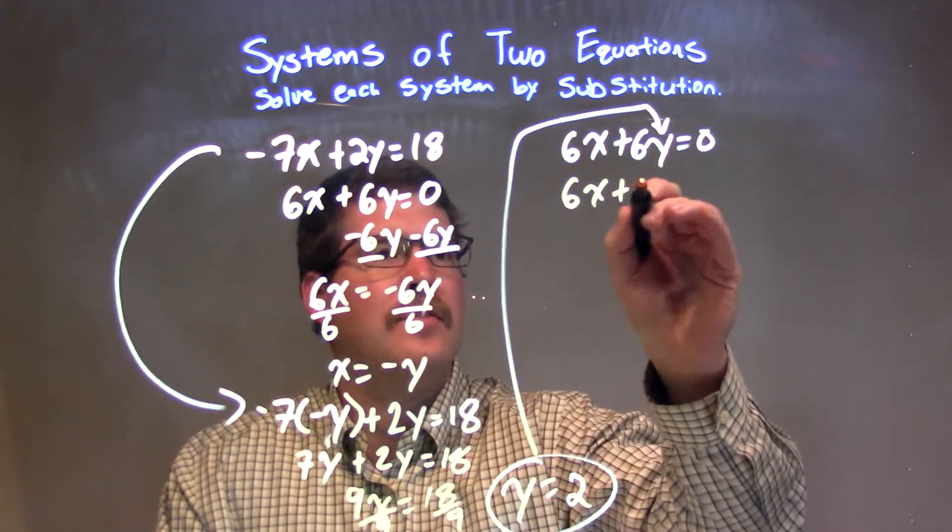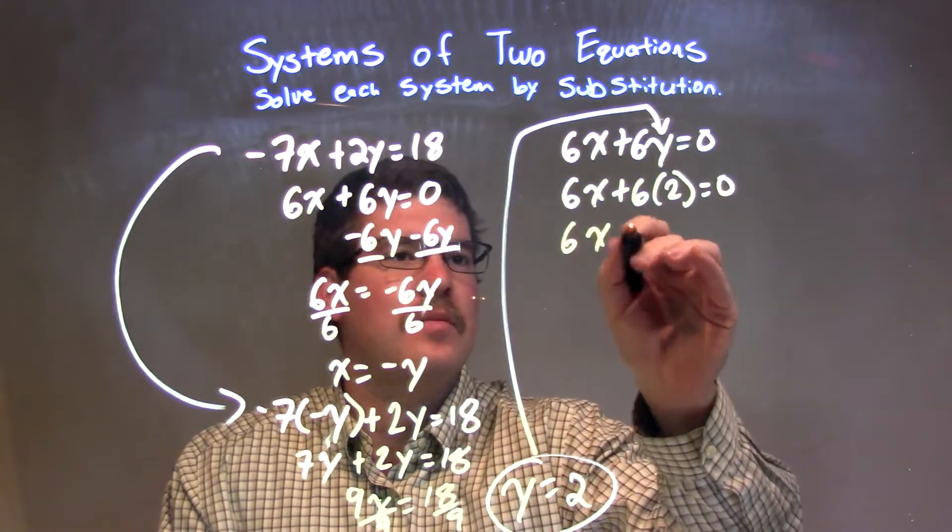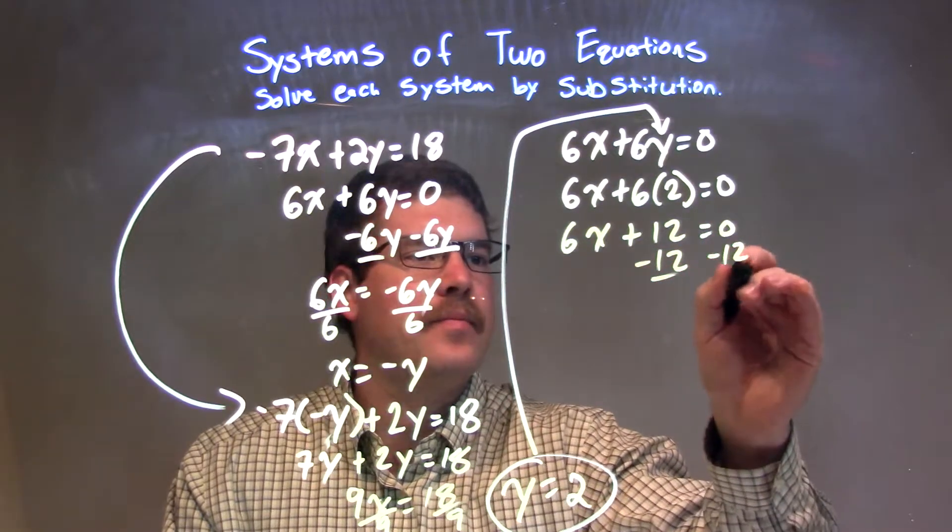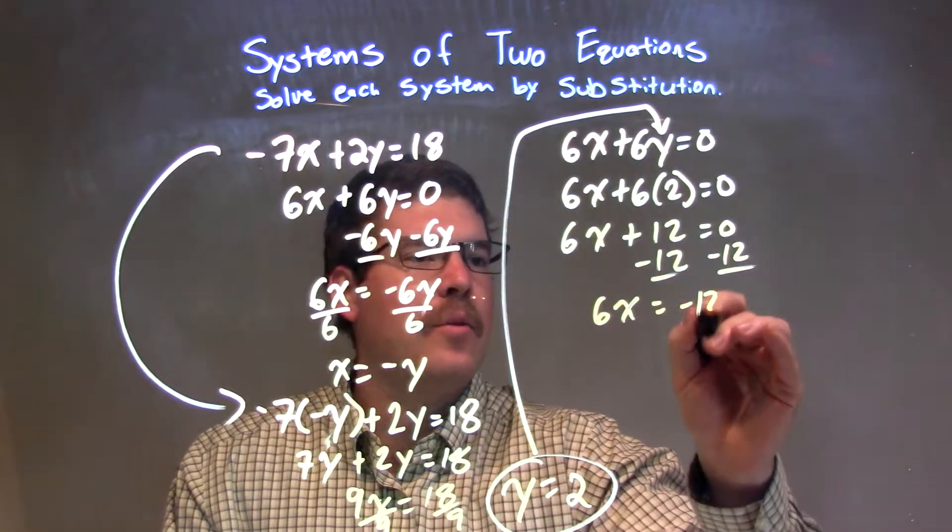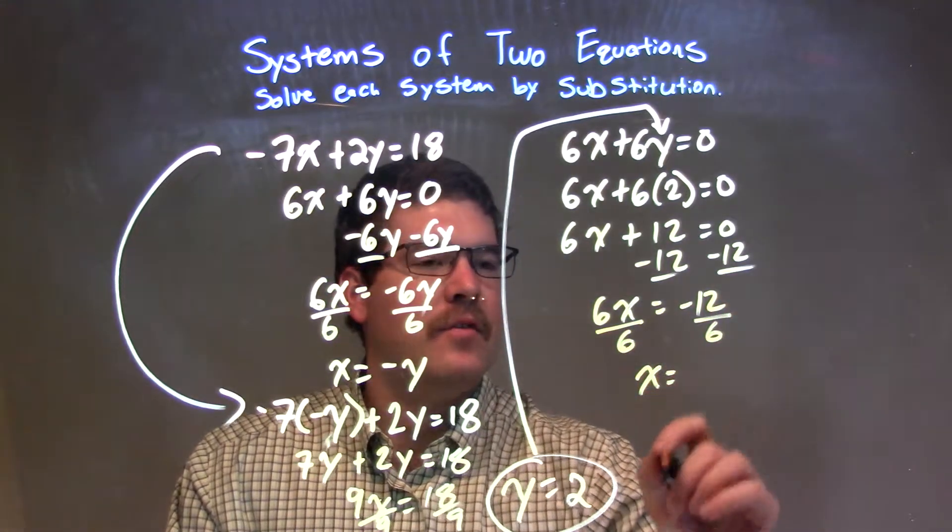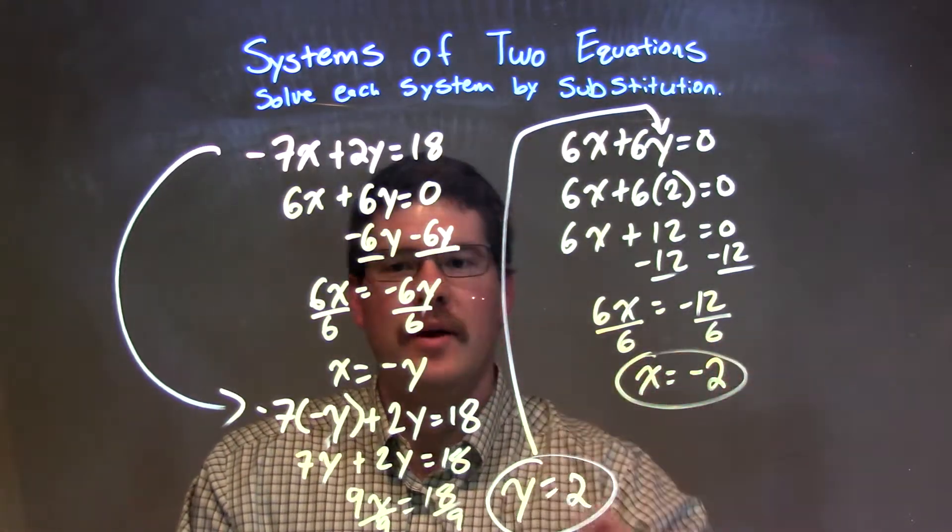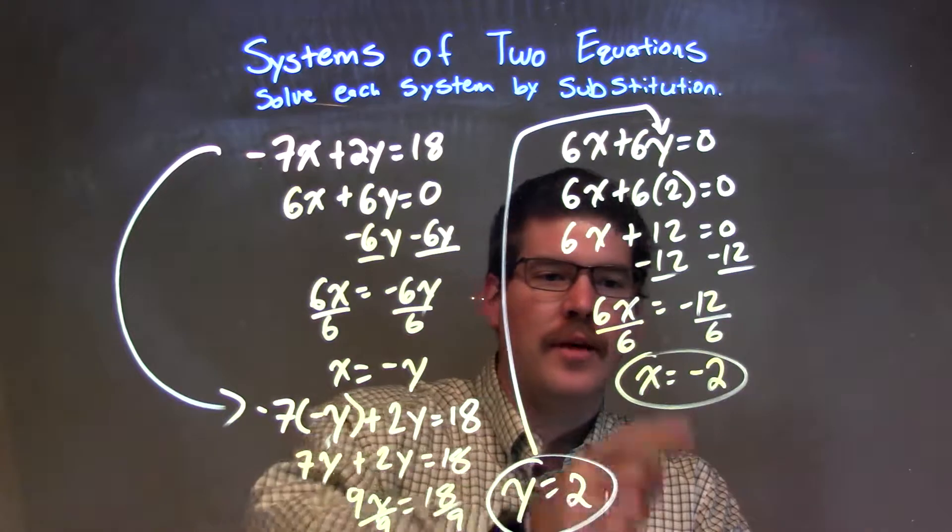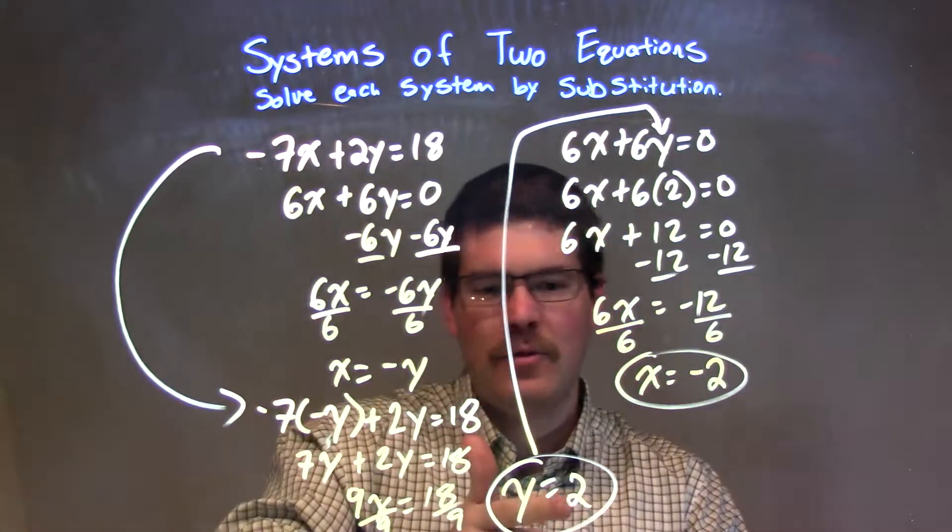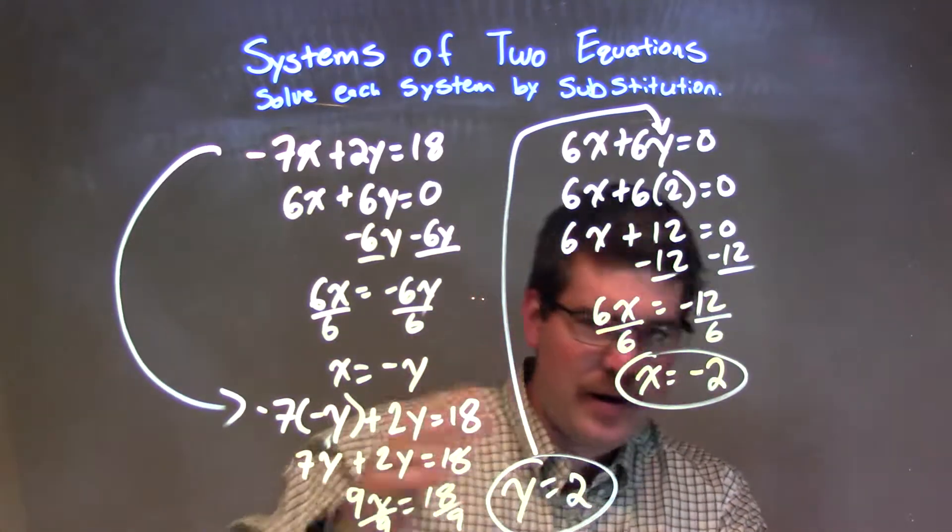We have 6x plus 6 times 2 equals 0. 6 times 2 is 12, so it's 6x plus 12 equals 0. Subtract the 12 from both sides. 6x equals negative 12. Divide by 6 on both sides gives me x by itself is equal to negative 12 divided by 6, which is negative 2. That makes sense, right? x is equal to negative y. If x is negative 2 and that's equal to negative y, the double negative, right? There's a 2. y is 2. The negative is out front, equals negative 2.